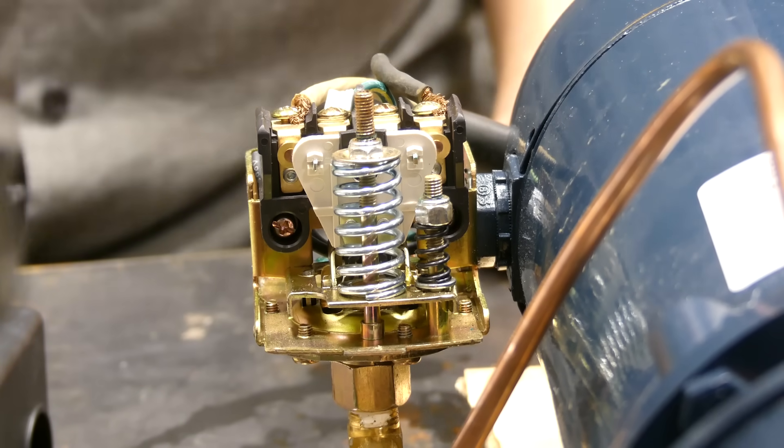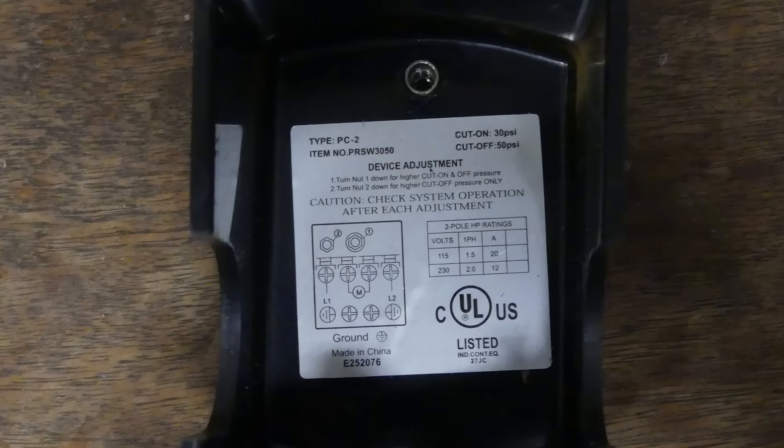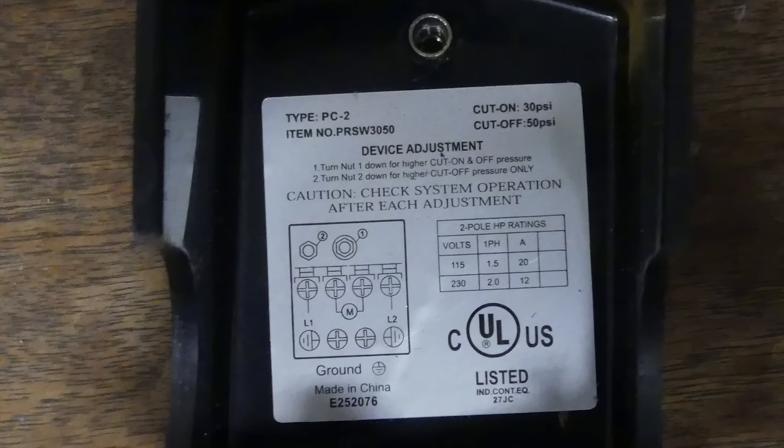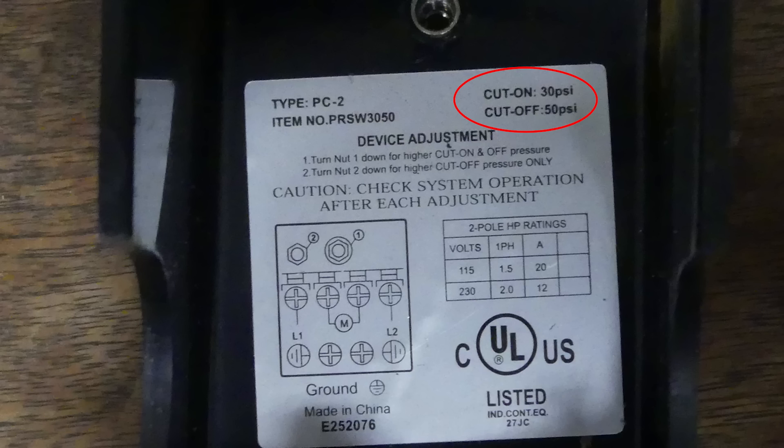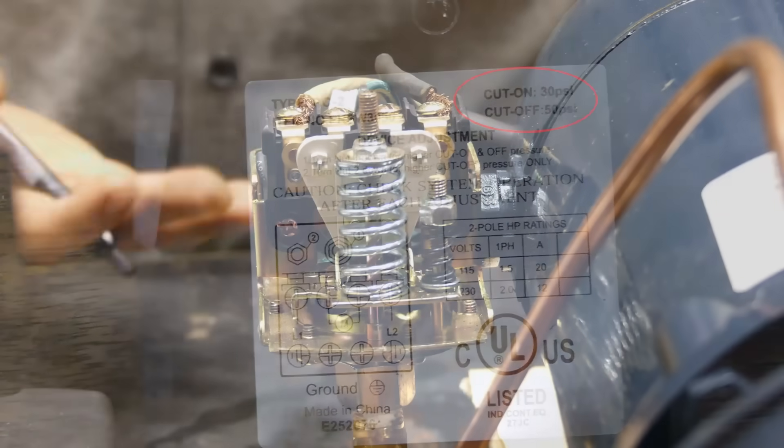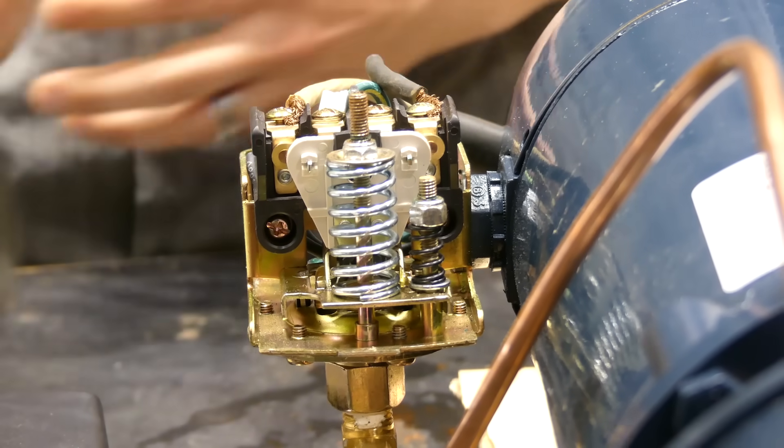You can find the factory preset settings inside the cover or on the box of the pump. This particular one is preset to 30/50. So that would be the pump turns on at 30 PSI and off at 50.